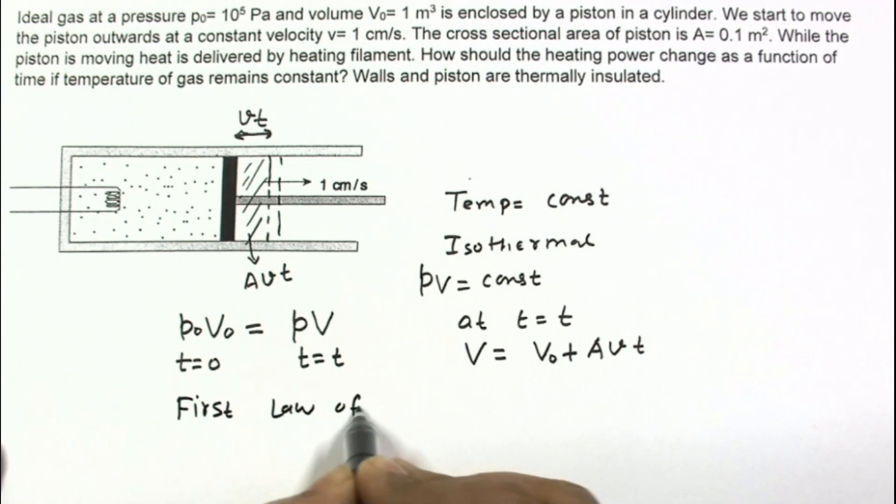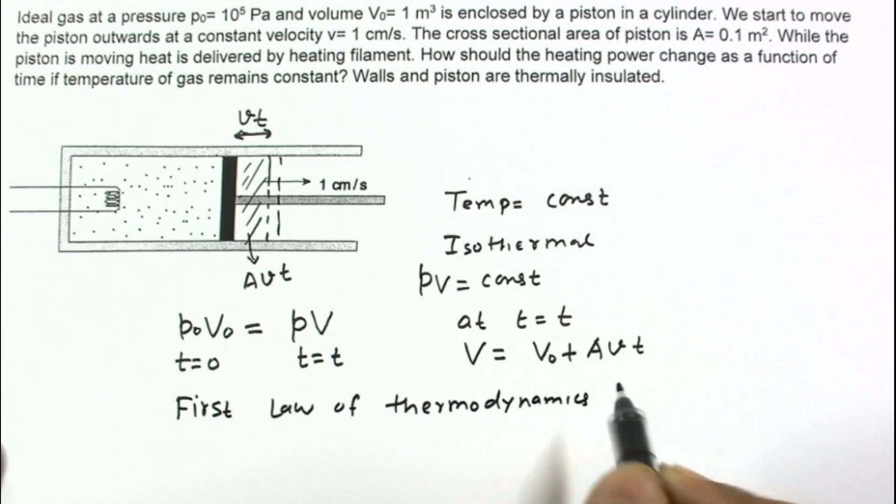From first law of thermodynamics, Q equals delta U plus W and delta U is 0 for isothermal process, so Q equals W.